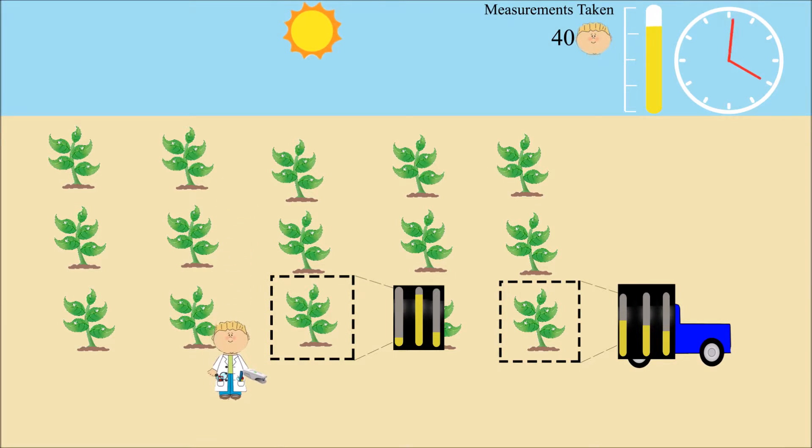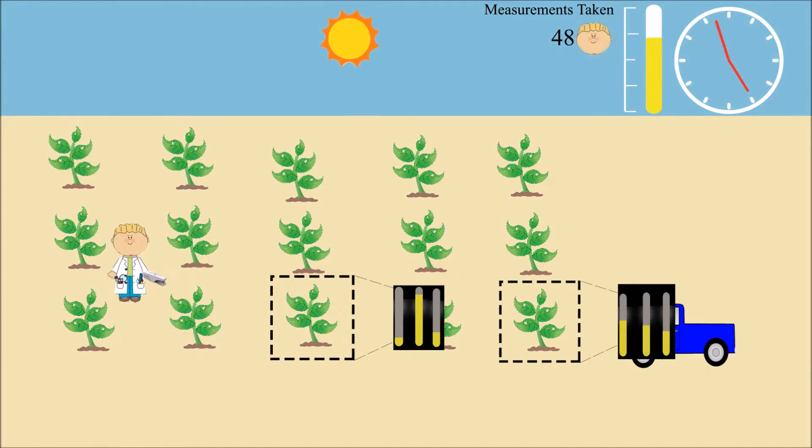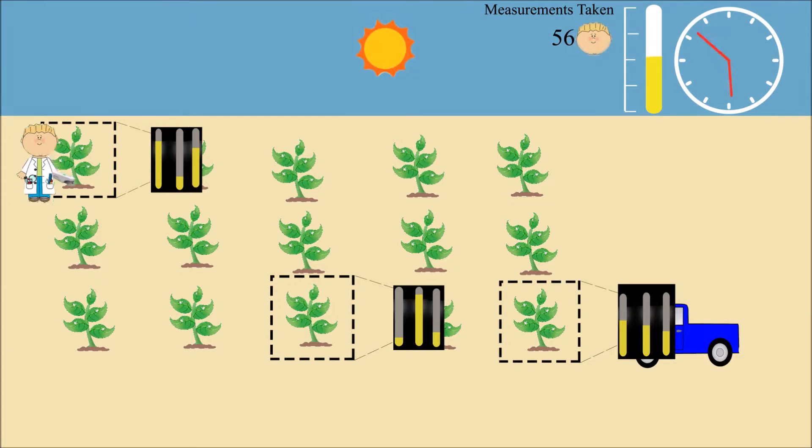Once he is done zigzagging through the field, we can see that the light conditions for the first plant he measured were very different from the light conditions of the last plant he measured.